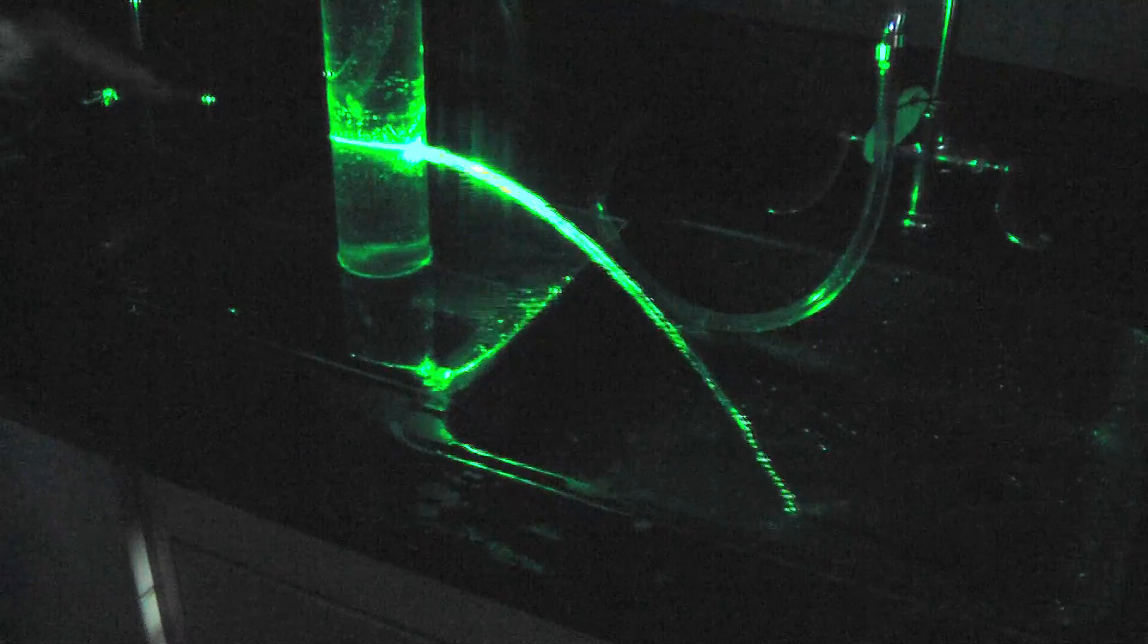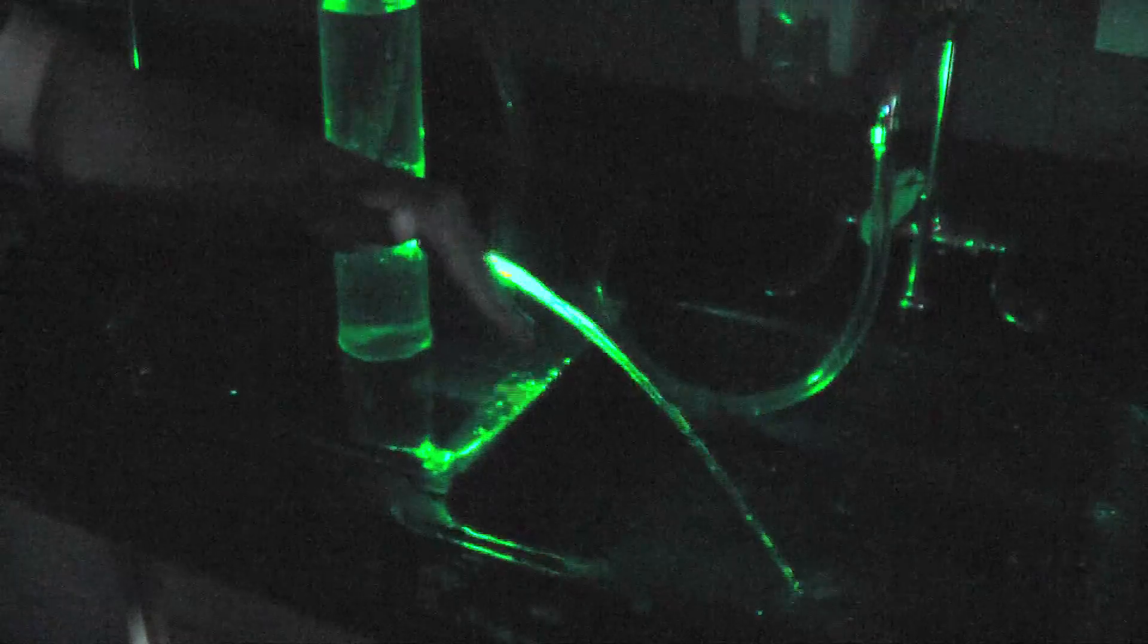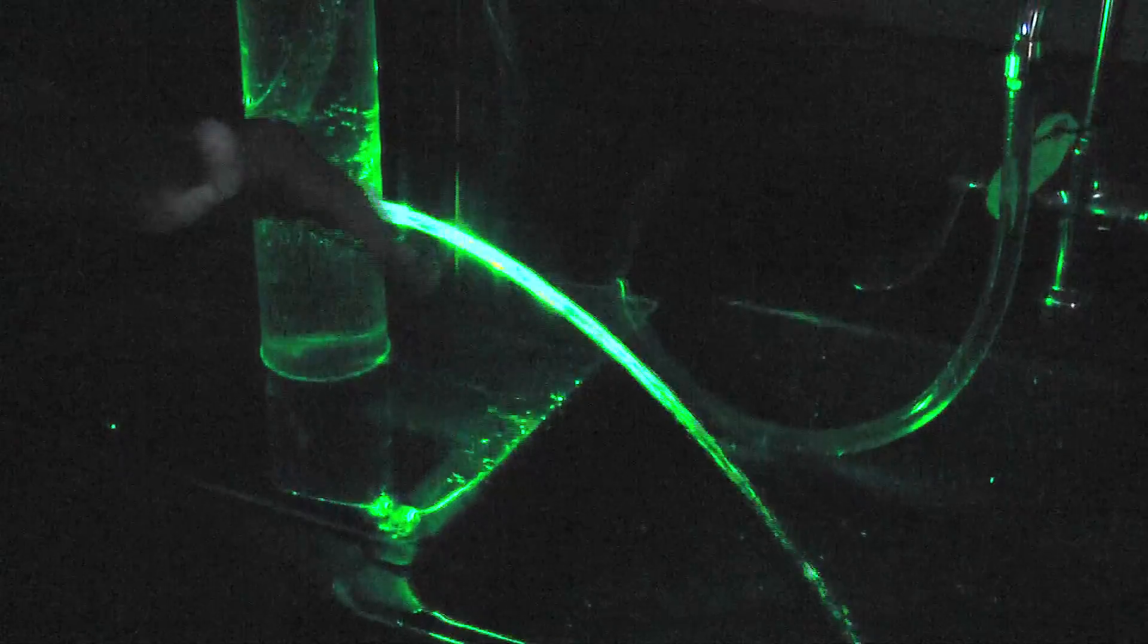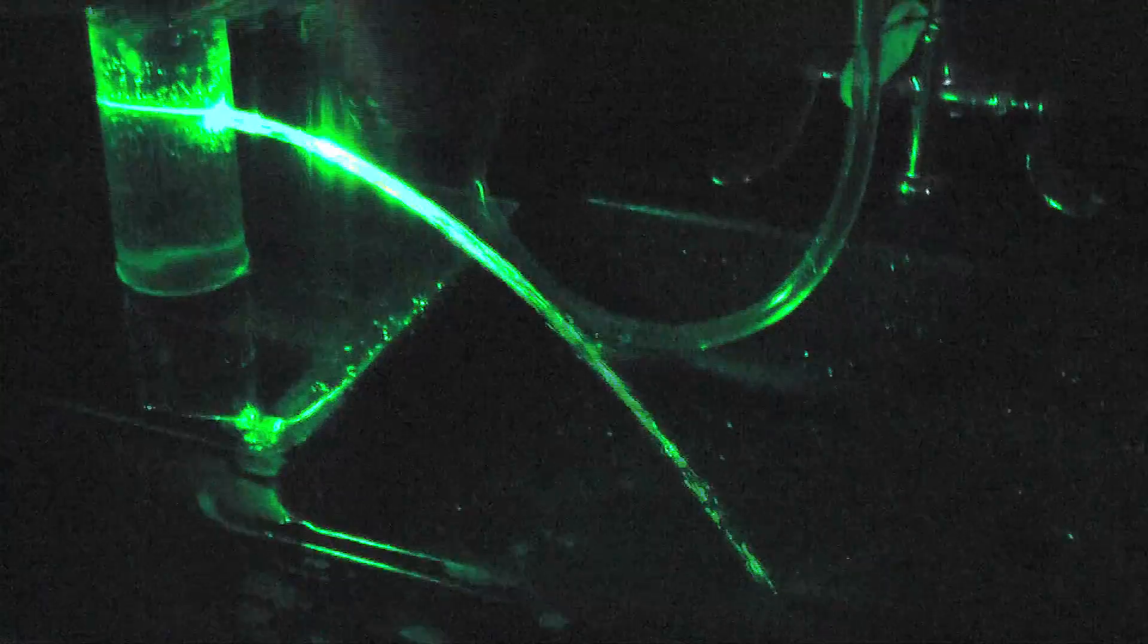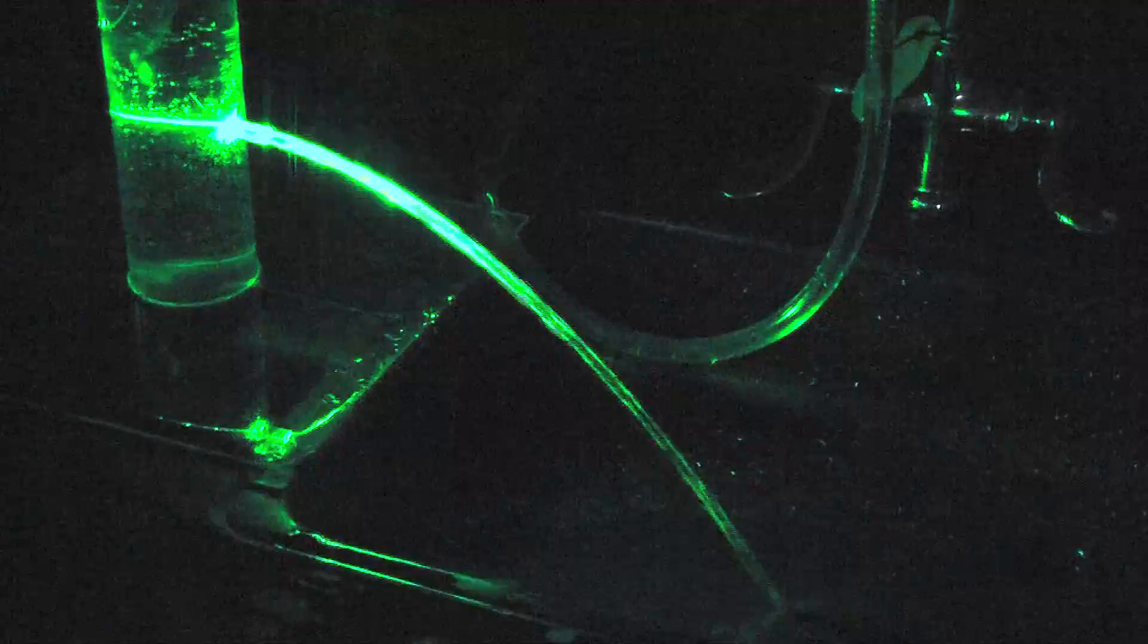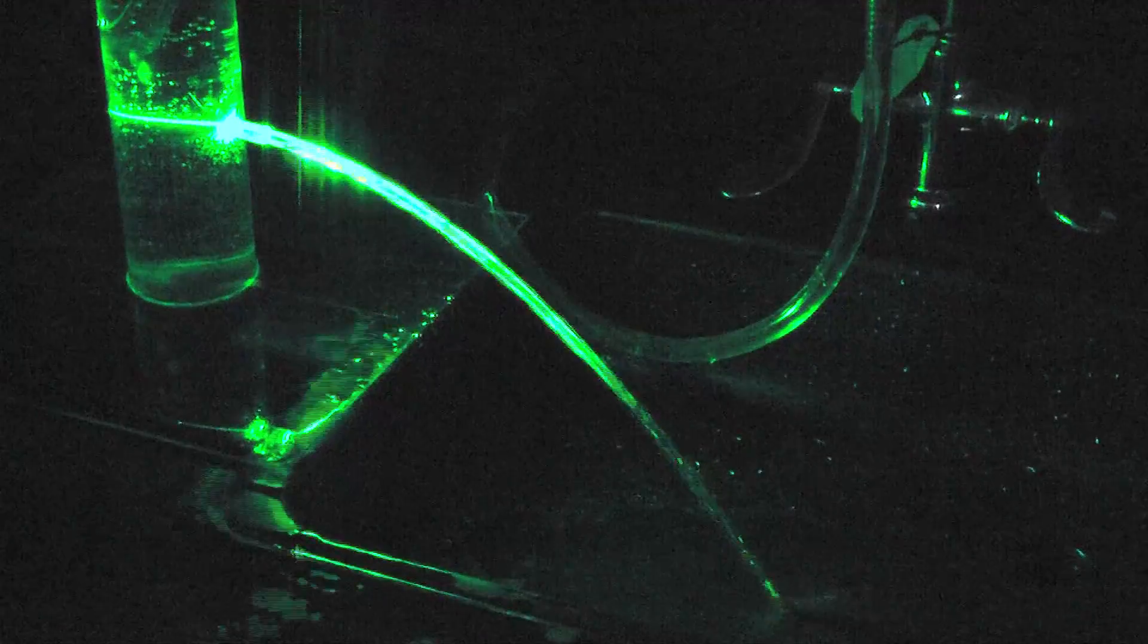So this laser, as it's coming through, it bends towards the surface. But the angle is such that it can't get out. So when it bends, it comes back in. And that's called total internal reflection.